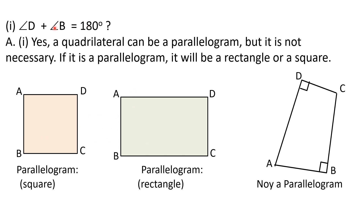So dear students, this condition is very interesting. These examples show that it is possible to have a parallelogram satisfying this condition, but it is not necessary. A quadrilateral can satisfy angle D plus angle B equals 180 degrees and yet not be a parallelogram. Do practice it two or three times to understand the difference.